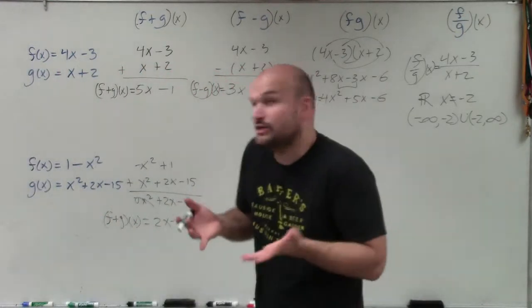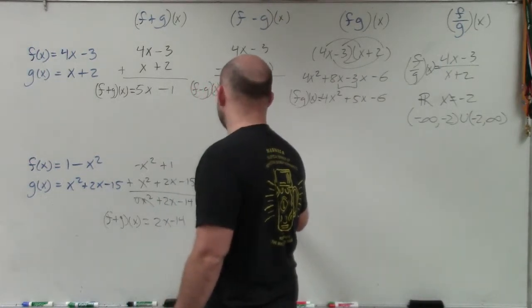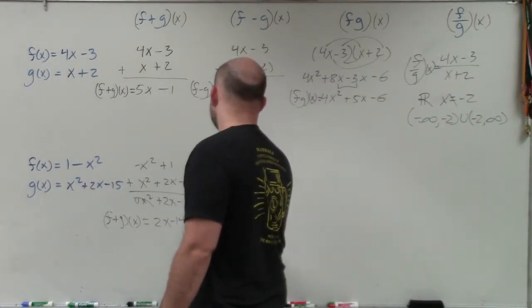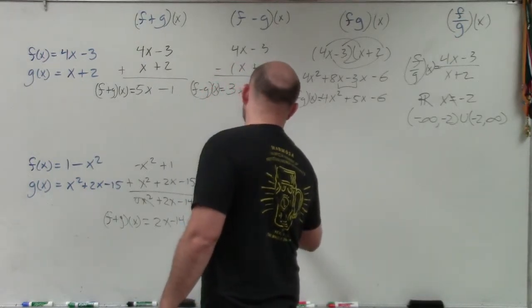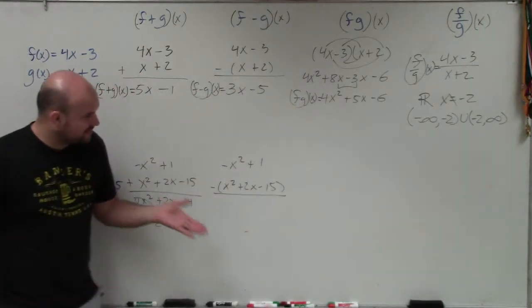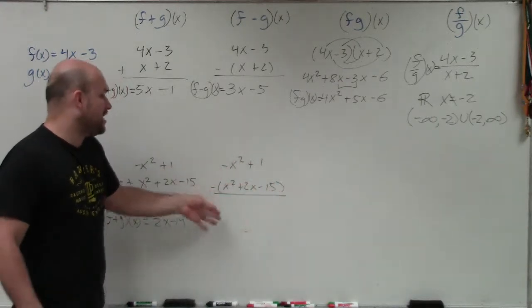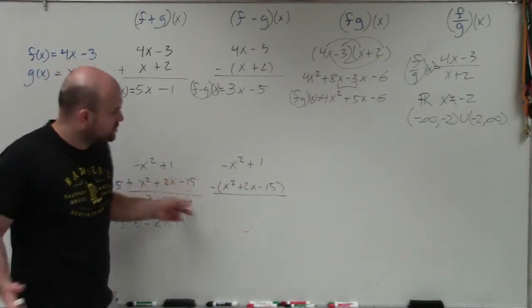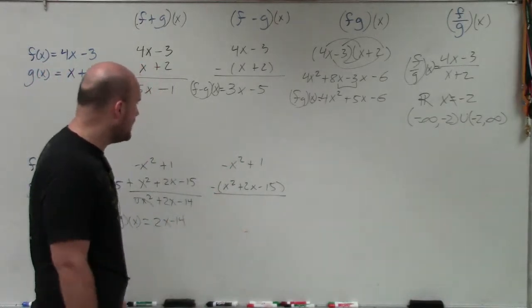All right, so now let's go ahead and do subtraction, which we're going to do again the exact same thing. So I'm just going to write these, negative x squared plus 1. Now, instead of addition, it's going to be subtraction. And again, I'm going to use parentheses to make sure that I remember you're going to subtract each one of these terms. You could also rewrite this as an addition problem, distribute the negative, and then rewrite an addition problem. I do that a lot.